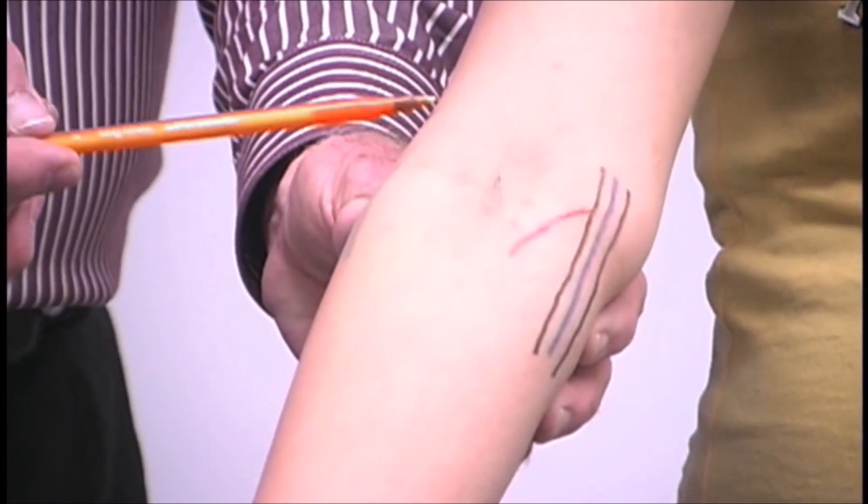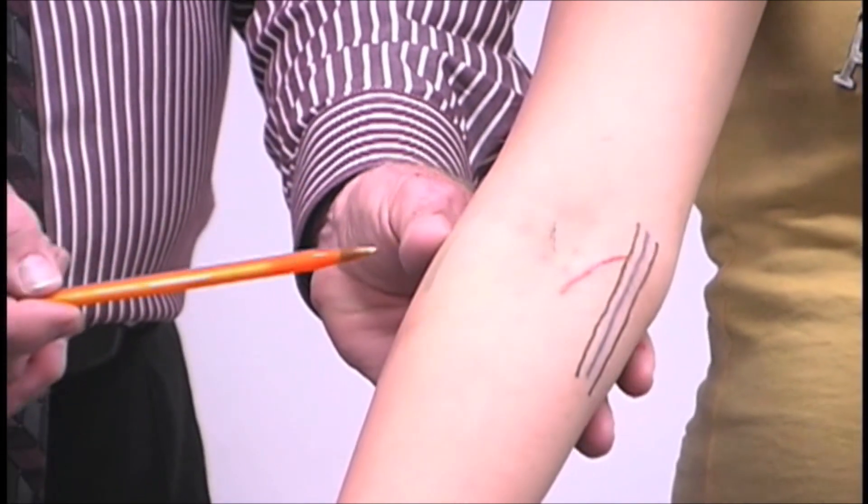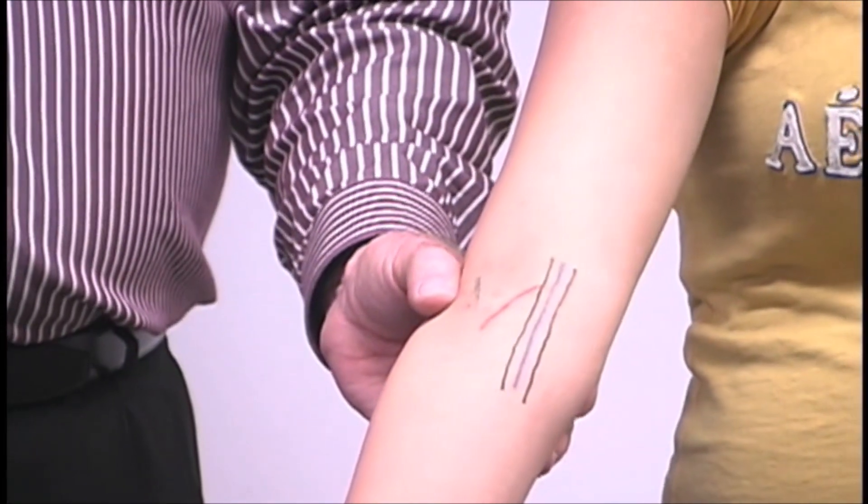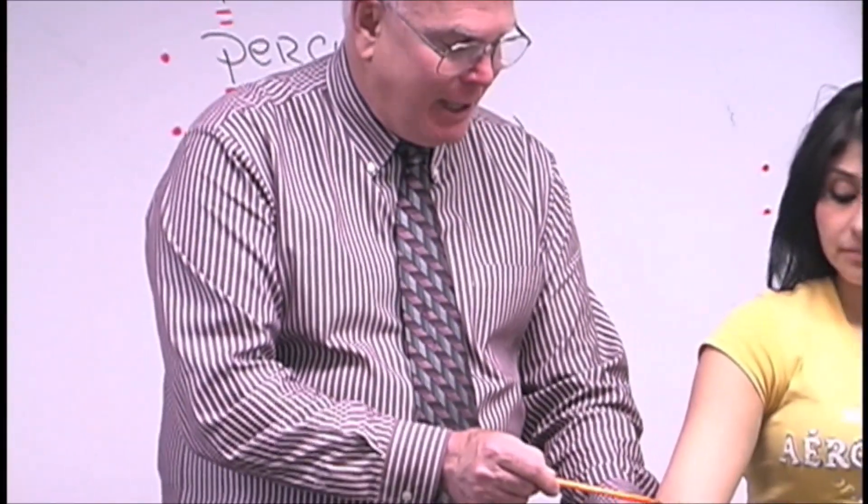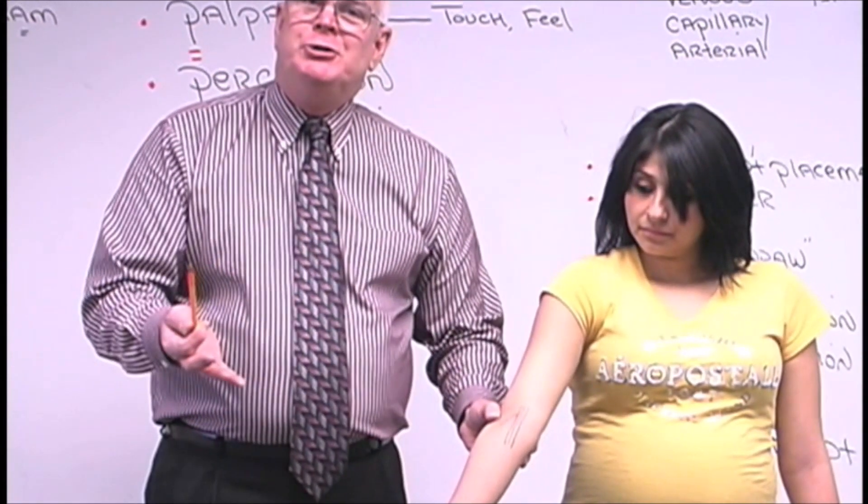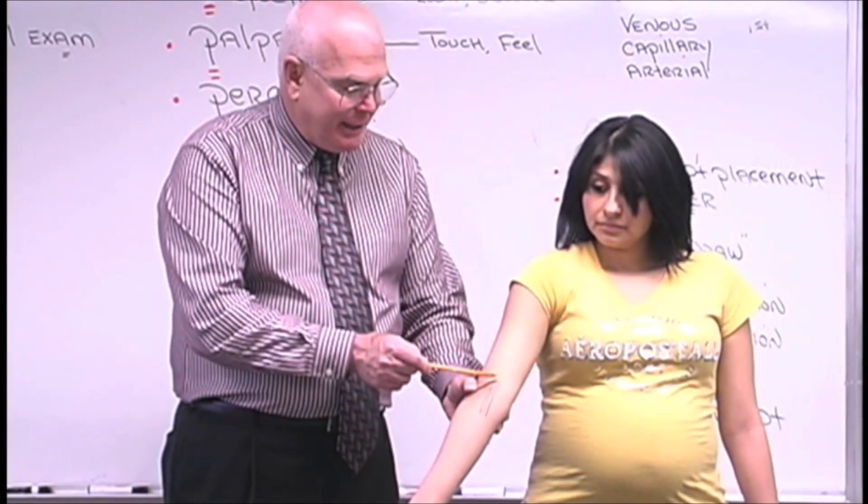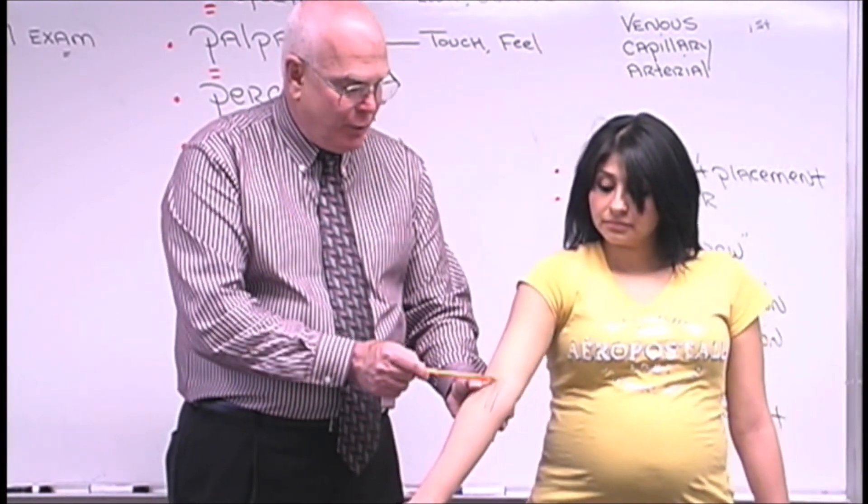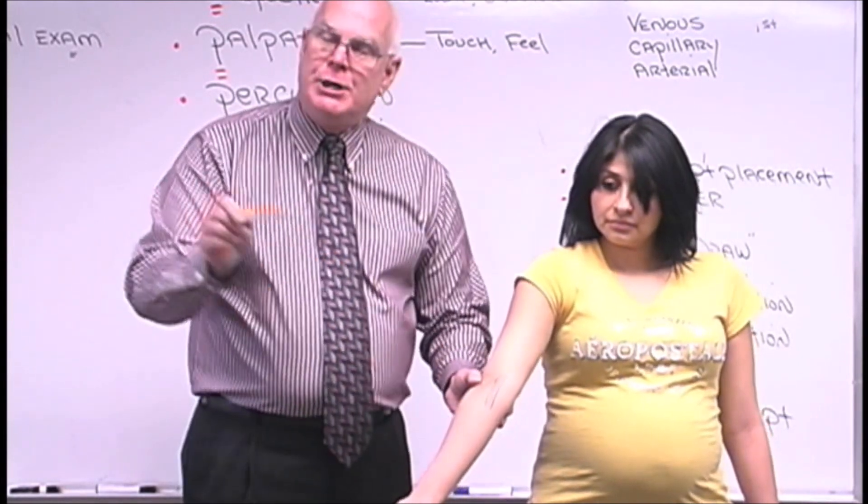The last choice, the one to try to avoid at all cost if possible, is the basilic. The basilic I've drawn here in blue. The reason we want to choose the basilic as the very last choice is that the basilic is paralleled by two nerves that run on either side of it.